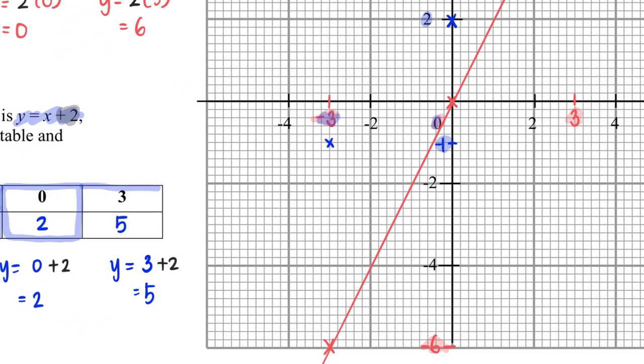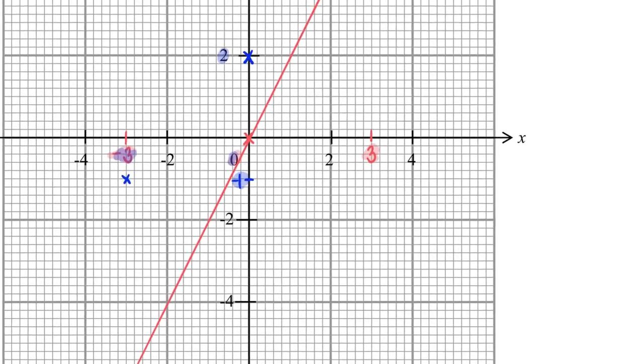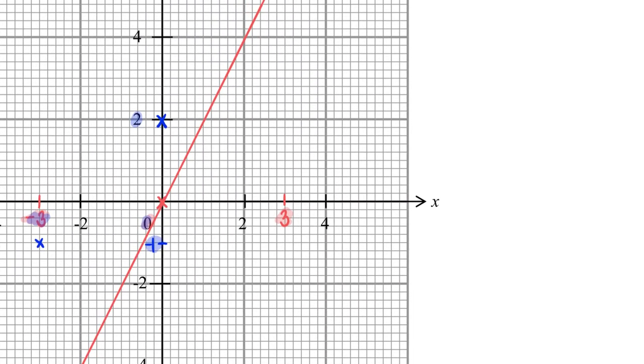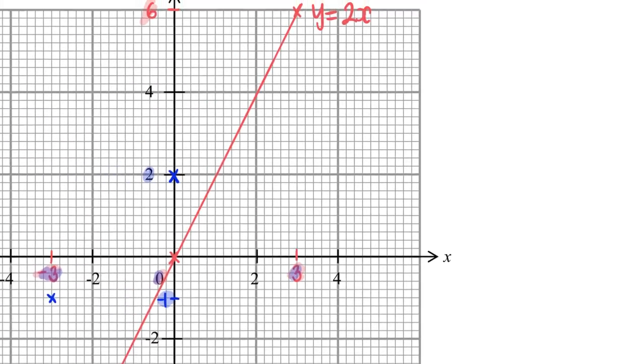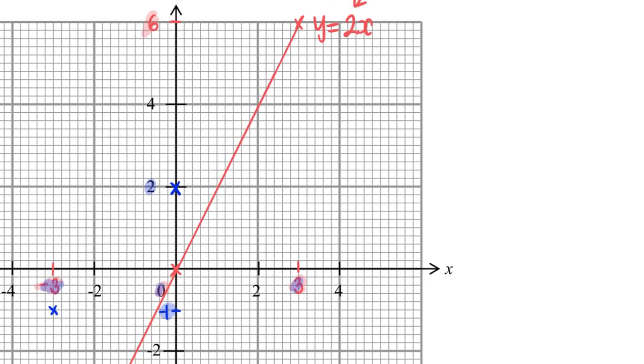And my last will be 3 and 5. So my x is 3 and my y is 5. 5 is somewhere here, so the point where it is both x equals 3 and y equals 5 will be here.